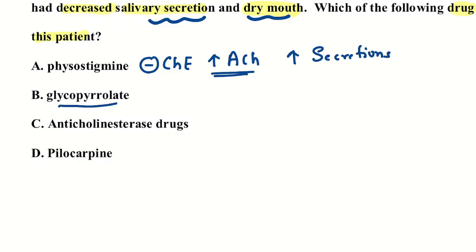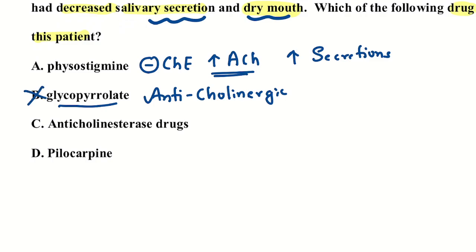Glycopyrrolate is an anticholinergic drug, which is known to cause decreased secretion and dry mouth. Since the patient is already having dry mouth, we do not give glycopyrrolate.